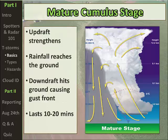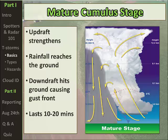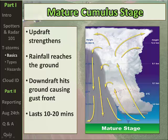In the mature cumulus stage, the updraft is much stronger in magnitude and reaches higher in the atmosphere — up to about 40,000 feet. This stronger updraft supports more rainfall that reaches the ground. The rain-cooled air becomes so heavy it can no longer be supported and comes down, generating a downdraft that hits the ground and spreads outward. The blue line represents a mini cold front — the leading edge of that downdraft air. This stage lasts about 10 to 20 minutes and is when most severe weather occurs, including damaging winds from the downdraft and large hail supported by the updraft.